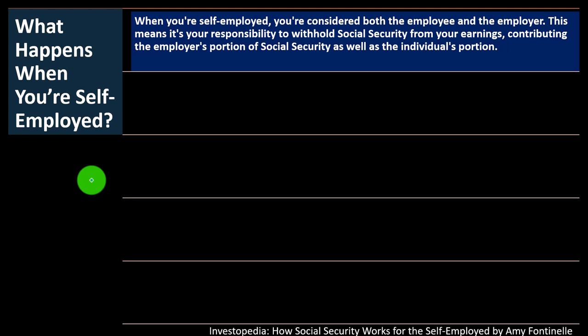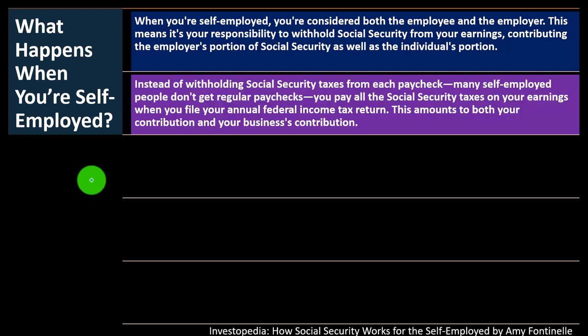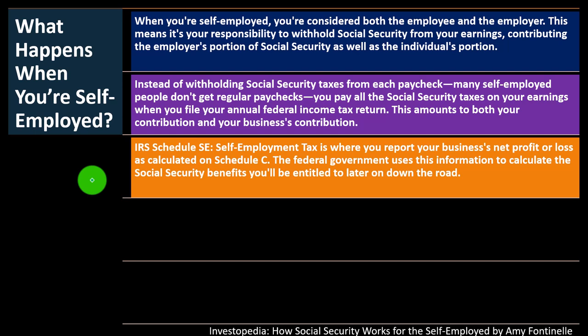Instead of withholding Social Security taxes from each paycheck, many self-employed people don't get regular paychecks — if you have a Schedule C, you're not going to pay yourself a paycheck. If you're an S corporation, you may have to, which is why some people set up as a single-member S corporation to try to reduce payroll taxes. As a sole proprietor, you pay all the Social Security taxes on your earnings when you file your annual federal income tax return — meaning your net income on Schedule C is what's going to be subject to payroll taxes, as well as federal income taxes. So you amount to both your contributions and your business contributions.